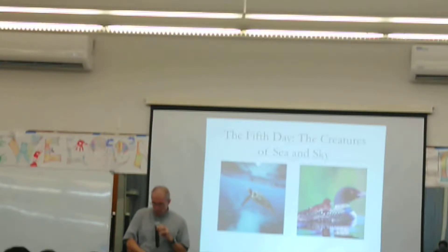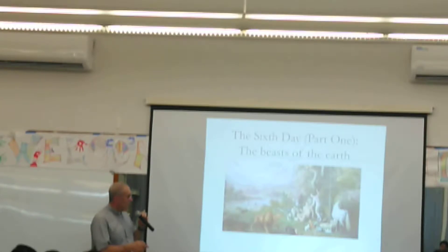God said, let the waters swarm with swarms of living creatures, and let birds fly above the earth, across the canopy of the heavens. So God created the great sea creatures, and every living creature that moves, and every winged bird. Again, this is kind of a quick and easy one. He's just inhabiting the seas and the sky. So on the sixth day, we're going to focus first on part one.